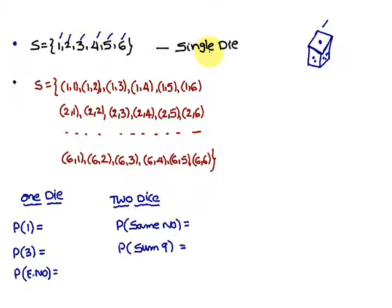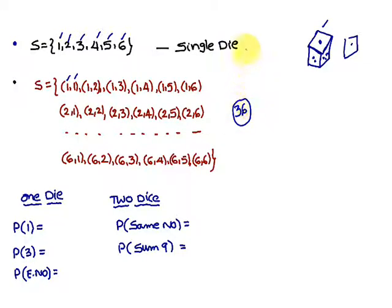When you throw two dice — that means when you throw another die, the same die — then you come across with these 36 elements. So on the first die one and the second die one, and if you go on like this, you are going to get 36 elements in the sample space. If you throw a single die, only six elements exist in the sample space. When you roll two dice, the sample space consists of 36 elements.